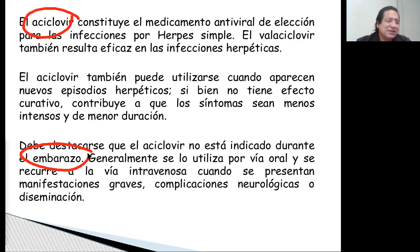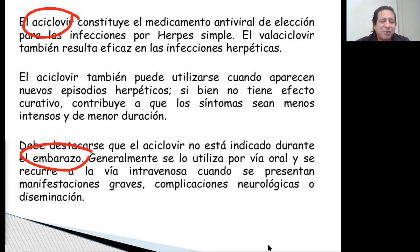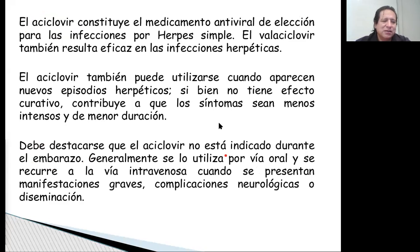Puede haber complicaciones severas, rara vez, pero a veces cuando la persona tiene alteración del sistema inmune, como VIH, SIDA, usa corticoterapia, etcétera. En ese caso, obviamente el virus se puede tornar más agresivo. Y en ese caso incluso puede producir lesiones neurológicas, encefalitis, meningitis, etcétera. Ese sería el herpes genital.